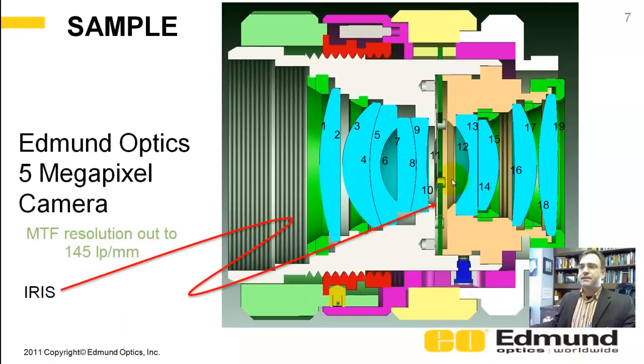And again, this is another example. This is one of Edmund Optic's 5 megapixel camera lenses. When I first started the design of this, I just let it float by stop size. I knew my focal length. I knew my F number requirement. I was able to just set what the entrance pupil diameter is. And I didn't know where the stop was.